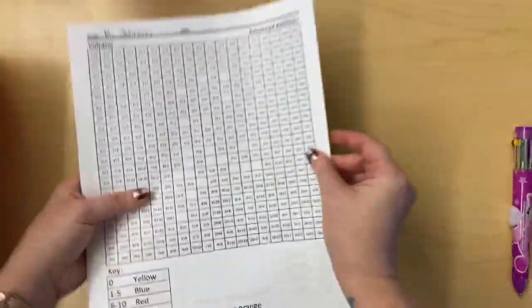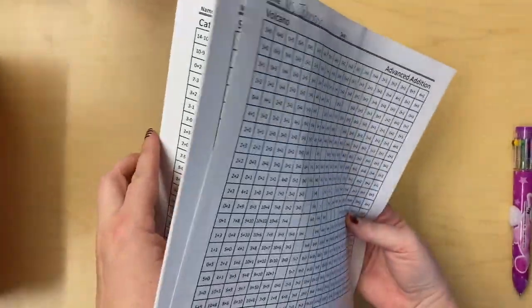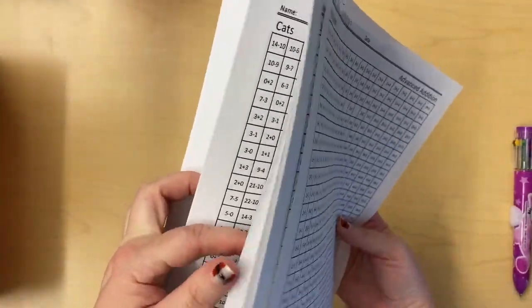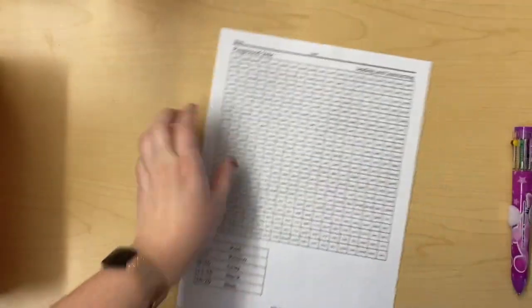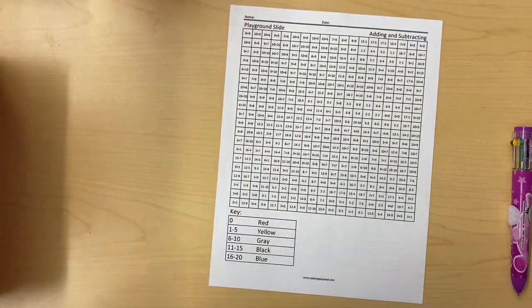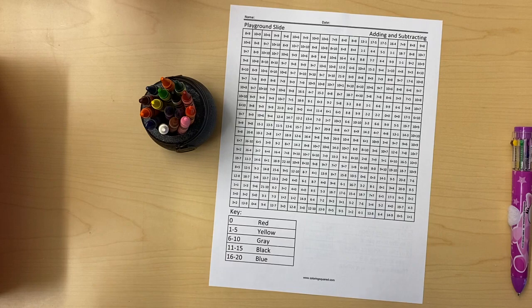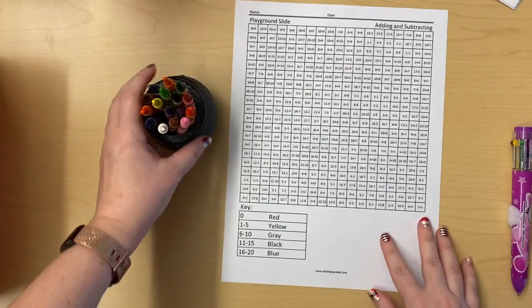You're gonna need one of these mystery pictures. I'll pick, let's do a playground slide. And you're also going to need something to color with. You can use crayons, markers, colored pencils, whatever you have that you want to use.